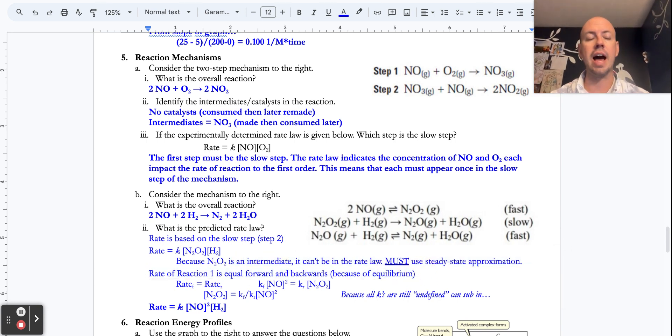We have not covered equilibrium yet. We're going to. But the idea is that it's going back and forth. But it's going back and forth by definition of equilibrium at an equal rate. So the rate of the forward, which is what would happen with NO running into NO, and the rate of the reverse, the N2O2 breaking back down, are equal to one another.